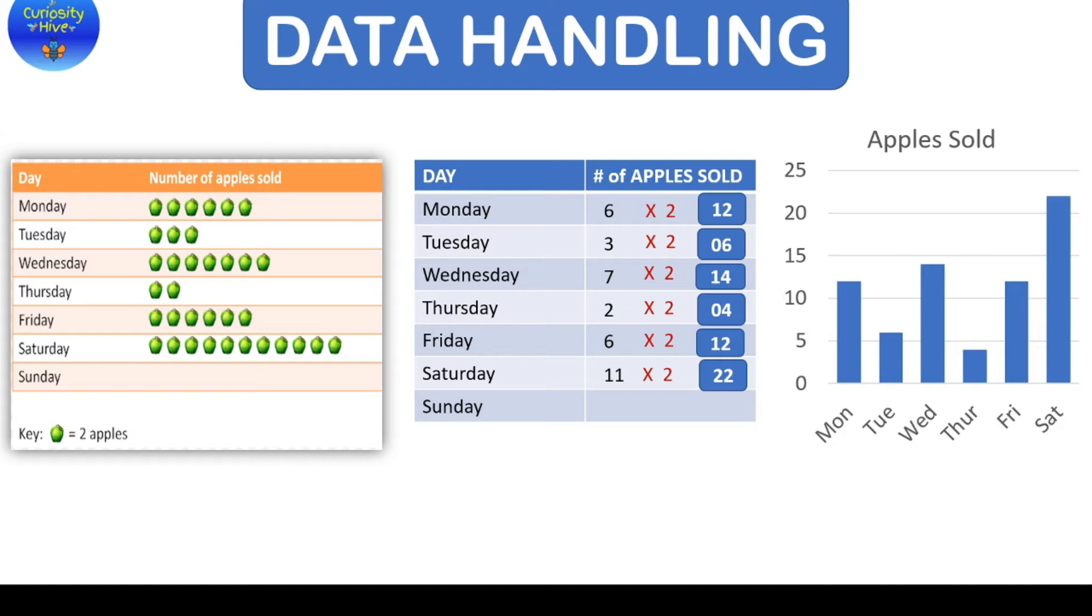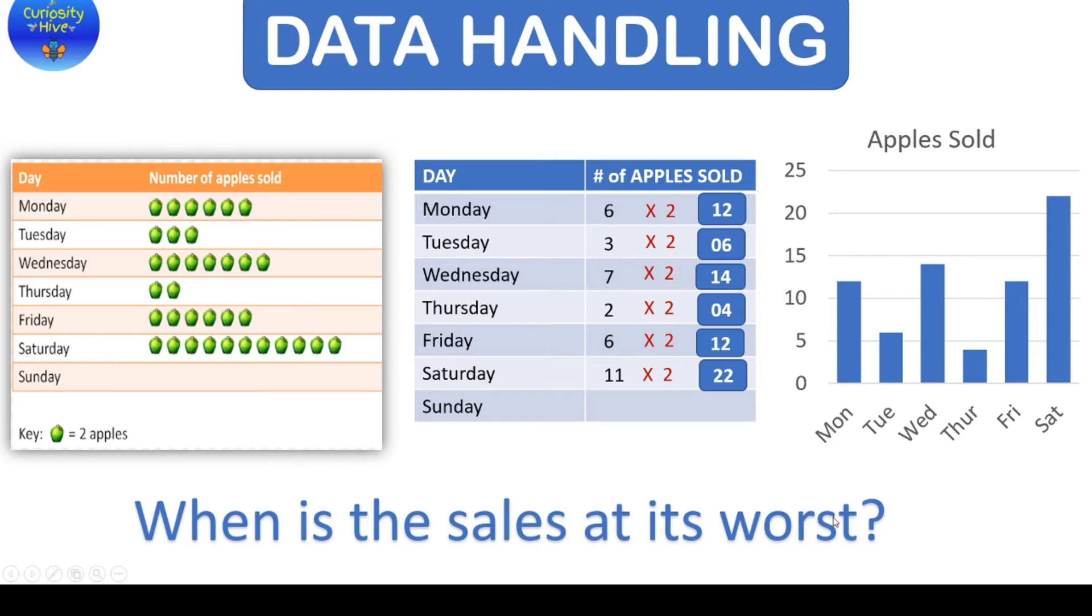Again, other question here could be when is the sales at its worst? Sales at its worst means when is the least number of apples sold? So in the tabular information, we look at the number which is the least that indicates the number of apples sold which is 4 that is on Thursday. Similarly, in bar graph, we look at the smallest bar which will indicate the least number of apples sold. Again, we get the answer Thursday.